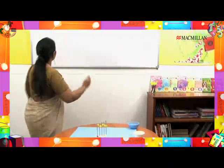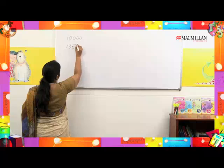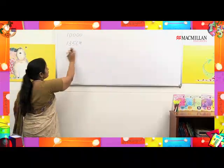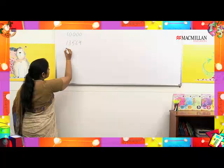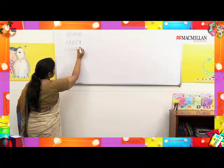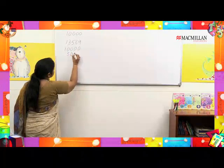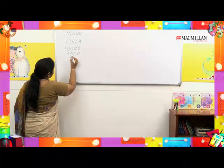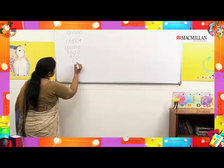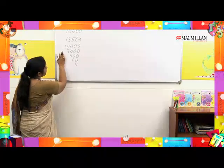Easy, isn't it? Let us try representing this number on the abacus. Let us first read this number. It is 10,000 plus 3,000 plus 560 and 4.